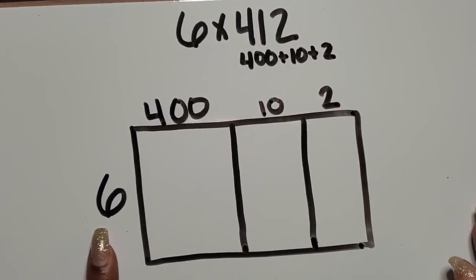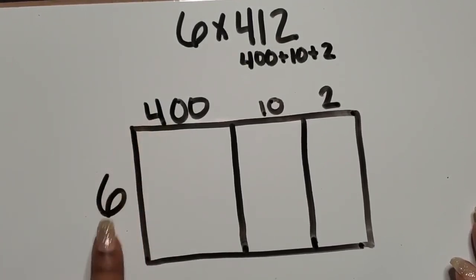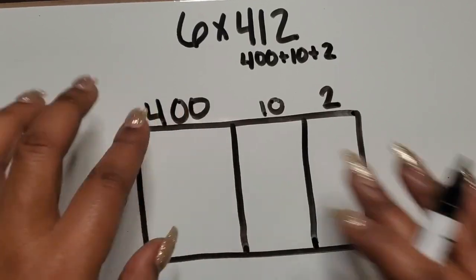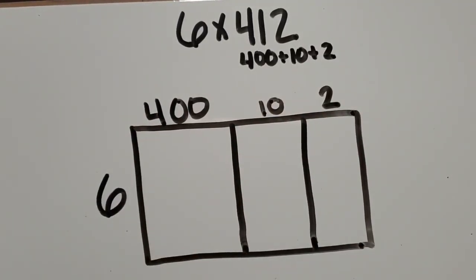Then I'm going to have the students write the number in each row, the number of rows, times the number in each row of each section in their rectangle just to help them with the steps of multiplying.